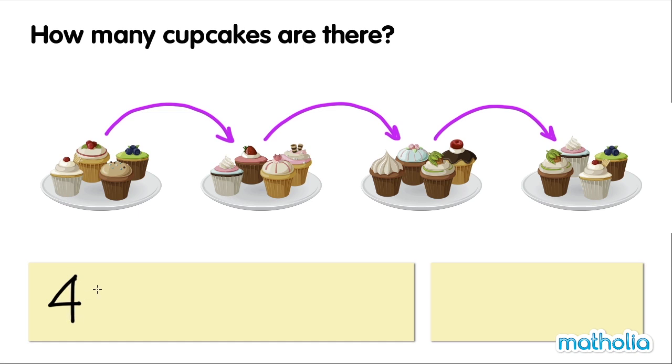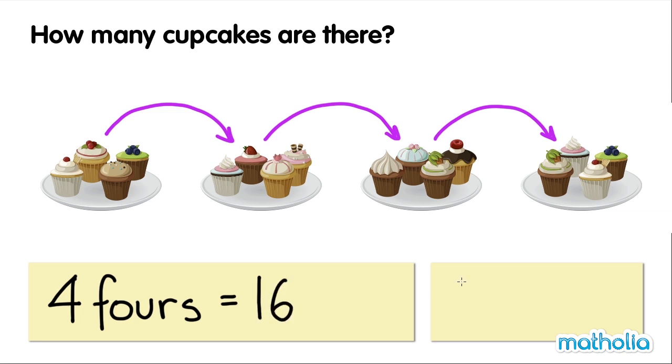Four fours equals sixteen. Four times four equals sixteen.